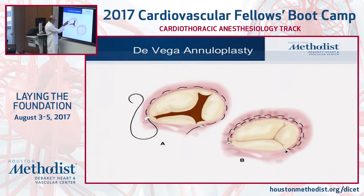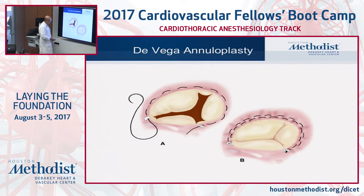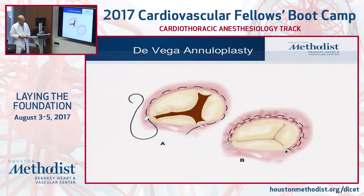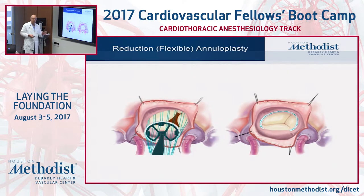The de Vega annuloplasty is typically a twin-suture technique buttressed with felt strips or felt buttons placed along the annulus to perform a reduction annuloplasty. It was very popular at one point because it's easy and quick to perform. However, long-term outcomes with this type of annuloplasty have been shown to be not as good as with prosthetic devices.